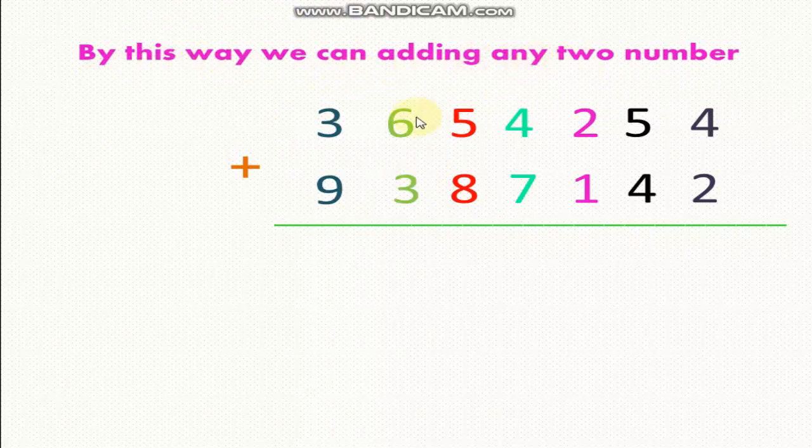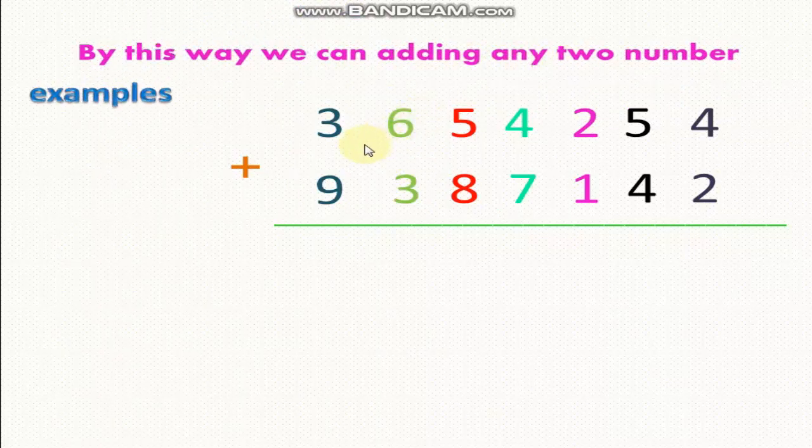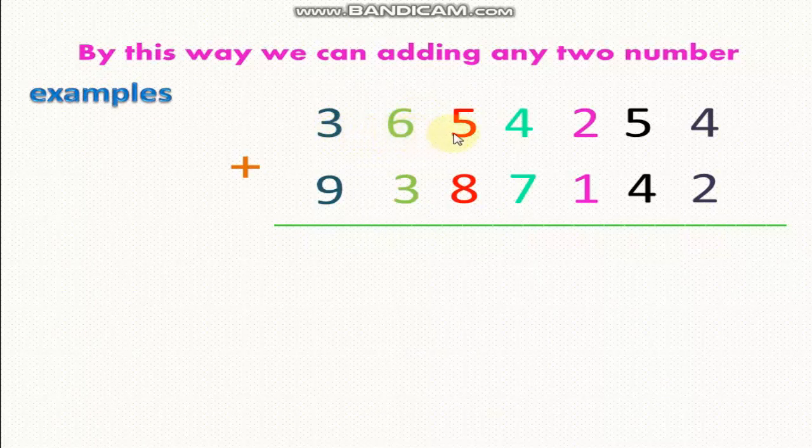By this way we can add any two numbers. For example, 3 million 654,254 plus 9 million 387,142.